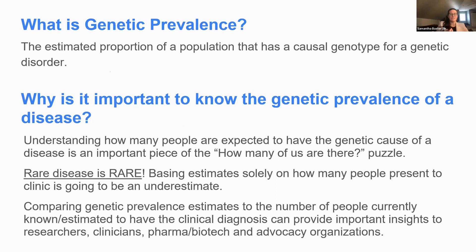Genetic prevalence is the estimated proportion of a population that has a causal genotype for a genetic disorder. So in the case of GBE1, what proportion of the world's population do we expect to have a disease-causing variant — a likely pathogenic or pathogenic variant — on both copies of your gene? That can be the same variant, called homozygous, or two different variants, called compound heterozygous.